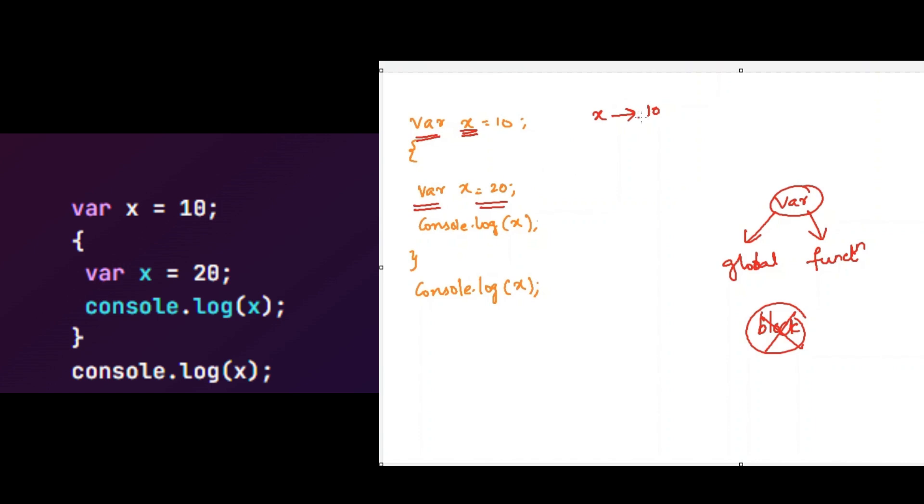Due to this, x value will be modified or overridden by this and it will become 20. Due to this, when you log the value of x anywhere, it will become 20 now.